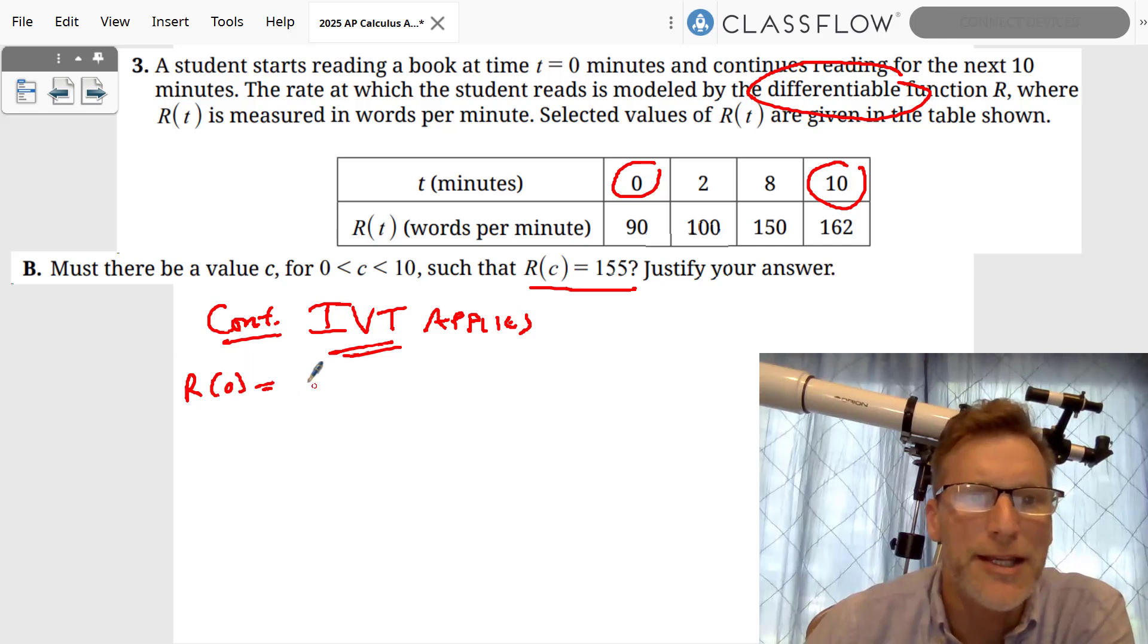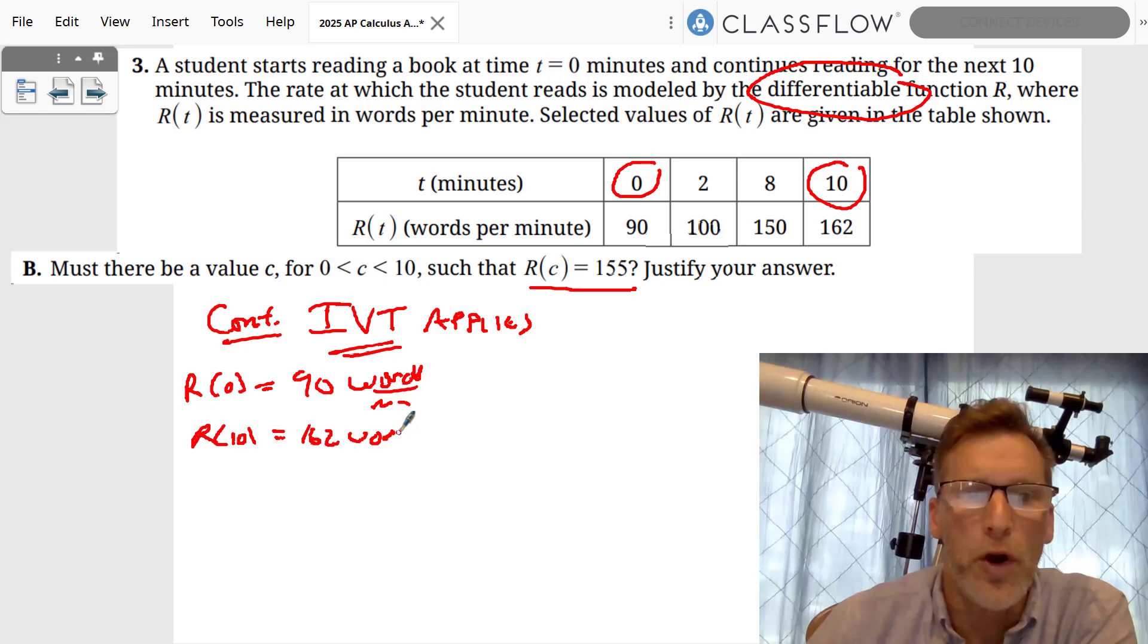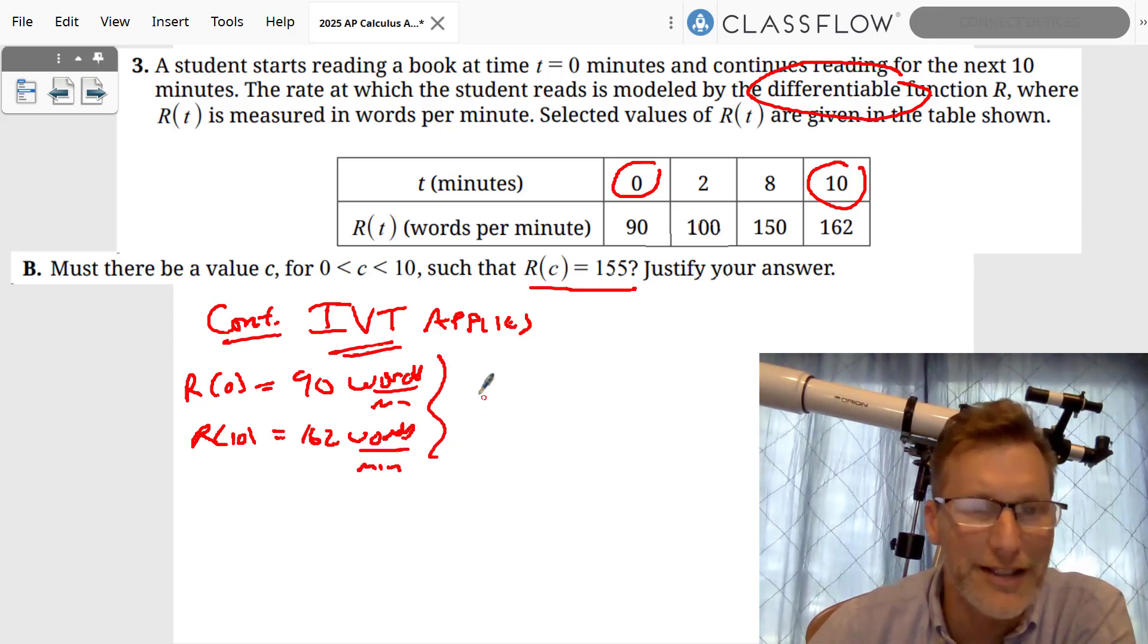So we can apply the Intermediate Value Theorem. What do we know? r of 0 is 90 words per minute. What is r of 10 equal to? r of 10 is equal to 162 words per minute.